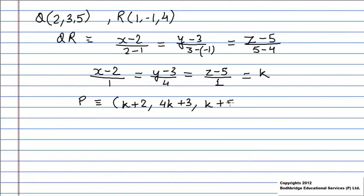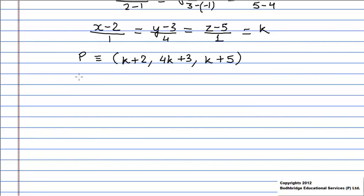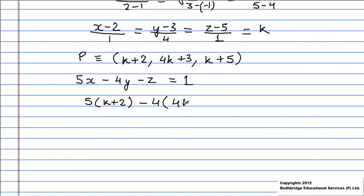Given that this point P also lies on the plane 5x - 4y - z = 1. Substituting the values, we get 5(k + 2) - 4(4k + 3) - (k + 5) = 1. Solving this equation, we get k = -2/3.